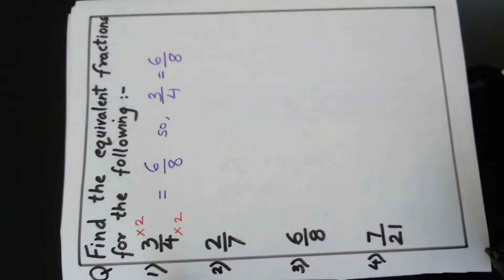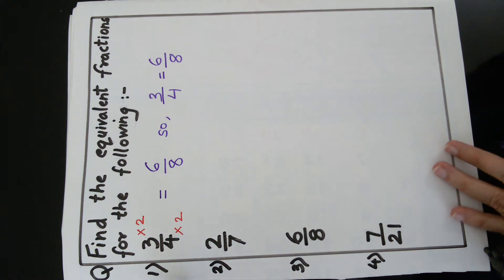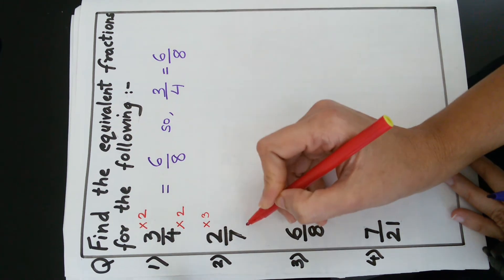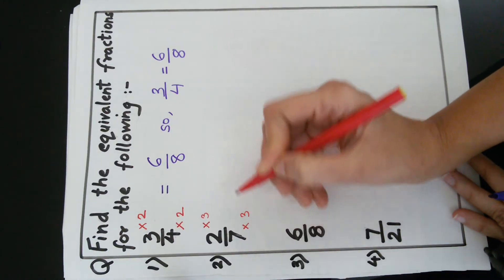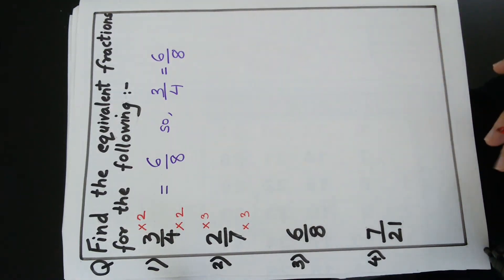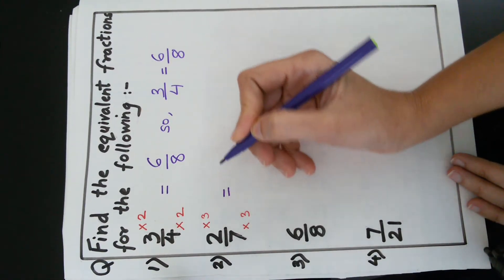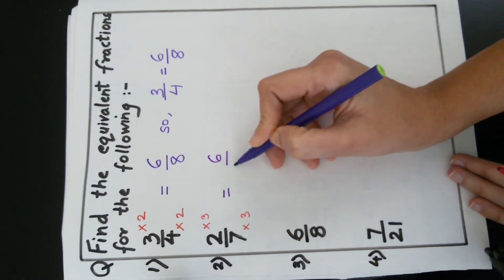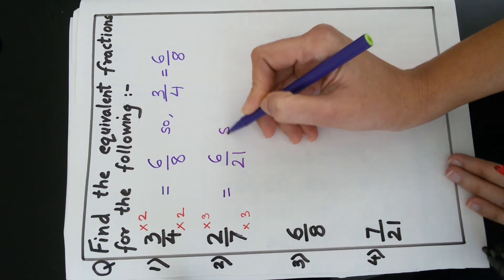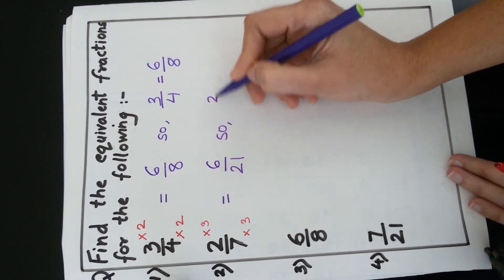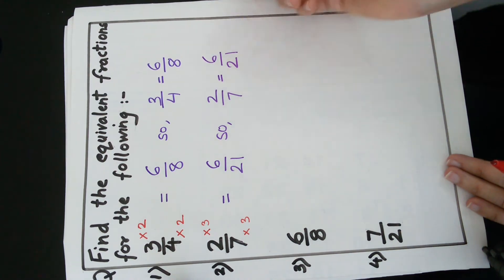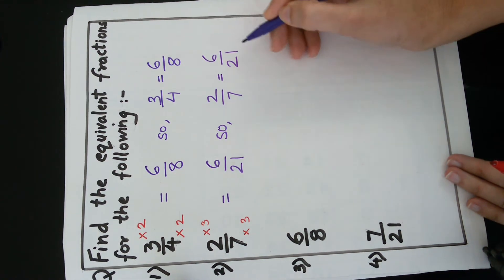Let us see the next example: 2 upon 7. If I multiply it by 3, my new fractions are: 2 times 3 is 6, and 7 times 3 is 21. So 2 upon 7 is equal to 6 upon 21. These are equivalent fractions.